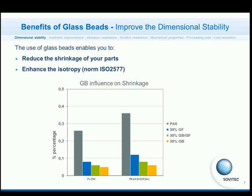The goal of this study is to show the improvement by replacing a part of these glass fibers with glass beads. In this first slide on dimensional stability, you can see the impact on the shrinkage values. In fact, the shrinkage values are decreased with the addition of glass beads.